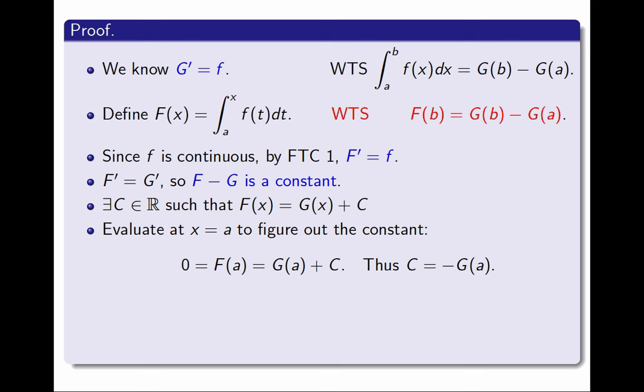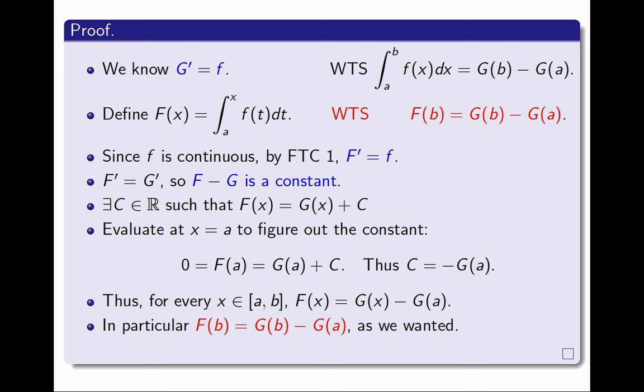So to summarize, what I have concluded, is that for every real number x on the interval from a to b, F(x) is equal to G(x) minus G(a). That's the value of the constant. In particular, when I take x to be equal to b, this means that F(b) is equal to G(b) minus G(a). But look at the top. That is exactly what we needed to prove. That's what we wanted. And therefore, this concludes the proof.